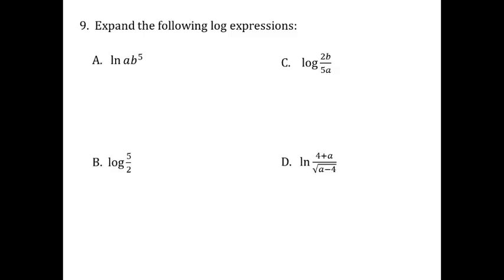Question number 9: expand the following log expressions using log properties. On part a, natural log of a times b to the fifth. Whenever two things inside the log are being multiplied, we can rewrite that as the addition of two logs, because logs are exponents and when we multiply we add exponents. So this becomes natural log of a plus natural log of b to the fifth. The power of 5 can move to the front of the log, giving natural log of a plus 5 times the natural log of b.